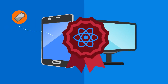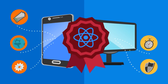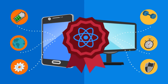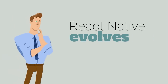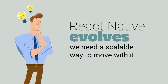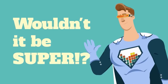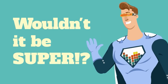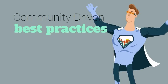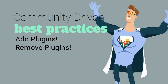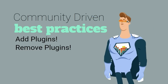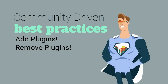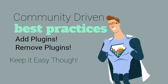Being a mobile JavaScript developer is tough these days. There's always so many working parts in a fast-paced framework. As opinions pile up, options can become overwhelming. The fact is, React Native evolves, and we need a scalable way to move with it. Wouldn't it be super if we could cleanly start with a set of best practices and then quickly add and remove plugins from our project, while maintaining the ability to customize and learn from each of these items?